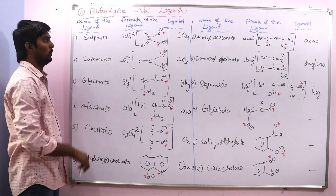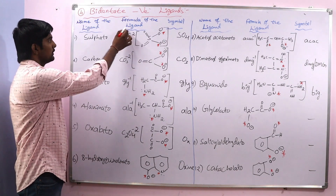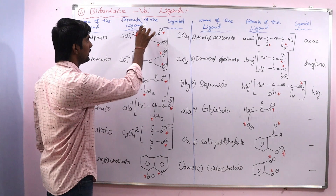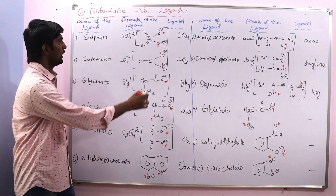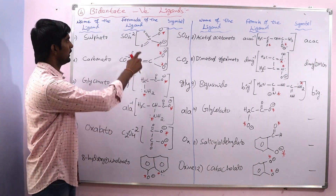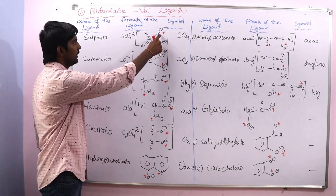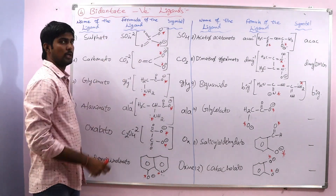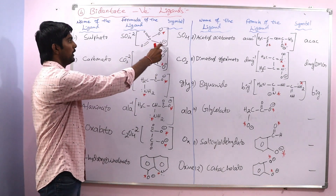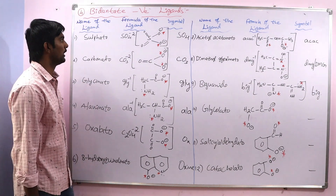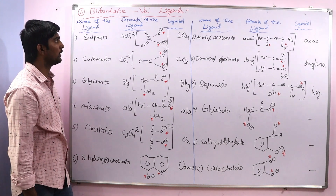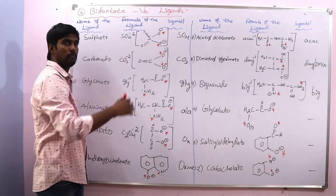The first one is sulphate. The formula is SO₄²⁻ and the structure of the ligand is shown here. The star mark indicates the donor atom. In this sulphate ligand, these two oxygen atoms act as donor atoms — they donate electron pairs to the central metal atom or ion and form coordinate covalent bonds. Its symbol is SO₄.